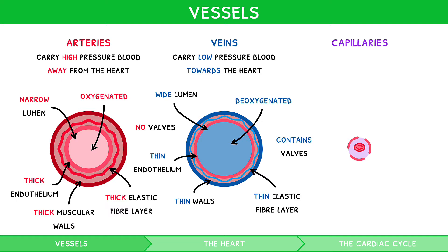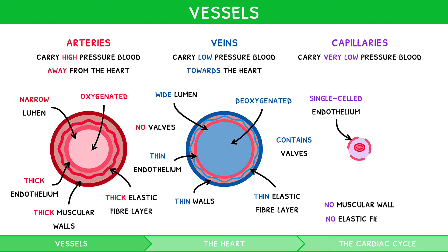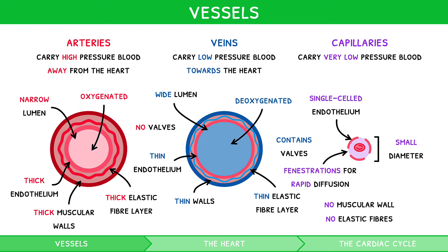Capillaries carry blood at very low pressure. They have single-celled endothelium and no muscular wall or elastic fibres. They have fenestrations, i.e. gaps between cells, to allow rapid diffusion and particle exchange between blood and tissues. They have a very small diameter, so they can fit into small gaps in tissues to reach all cells.